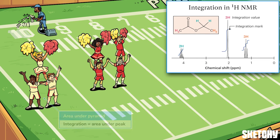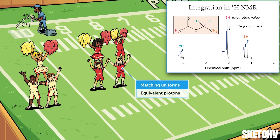The cheerleaders in each formation are wearing equivalent uniforms to symbolize equivalent protons. Two protons are equivalent if replacing either of them with a random X group creates the same molecule, no matter which hydrogen you replace.